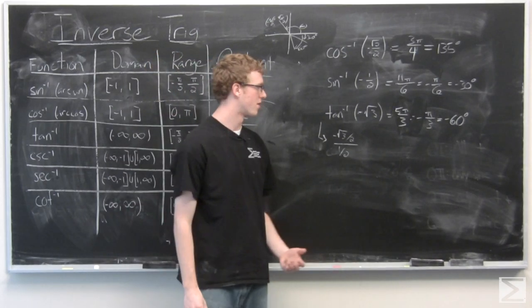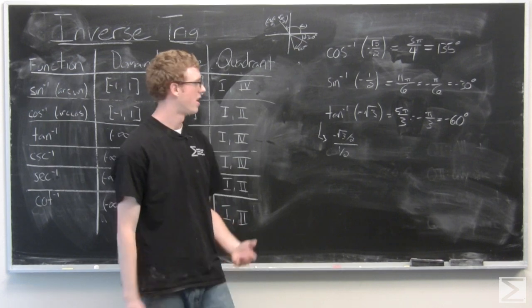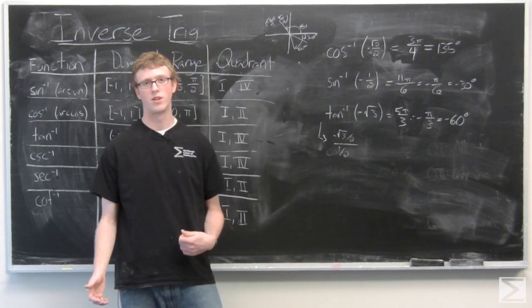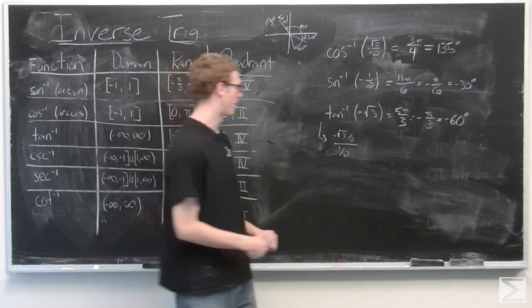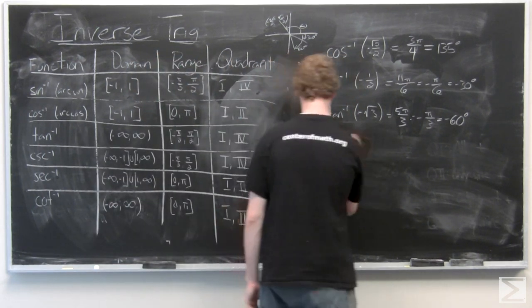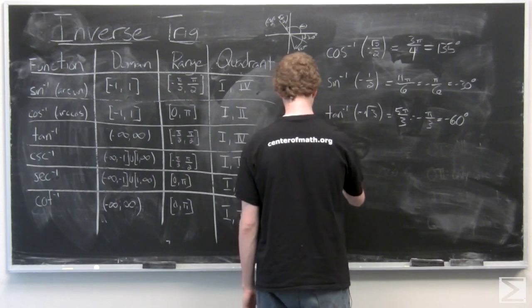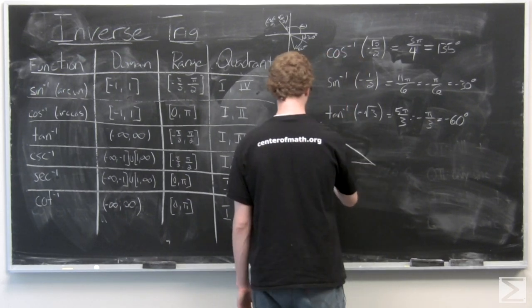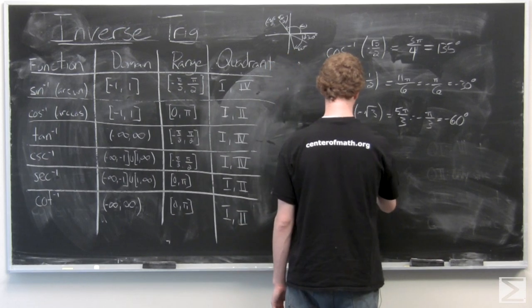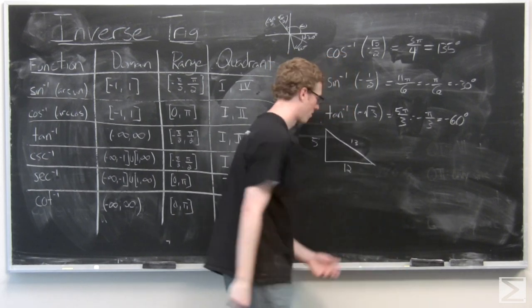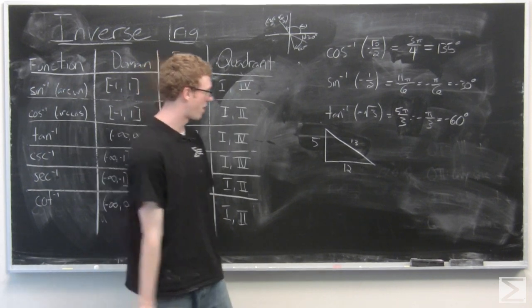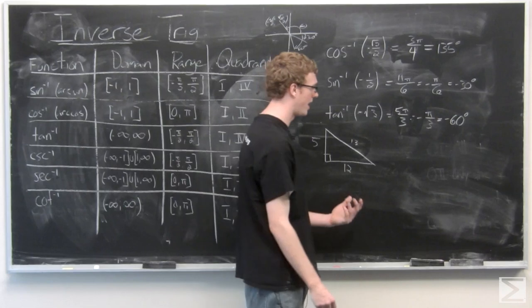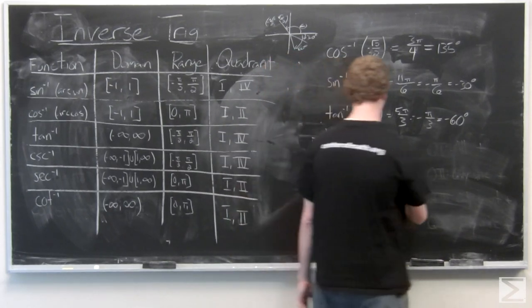So now we're going to take a look, just a quick look at a triangle, and we're going to find the values of a trig function from using inverse trig. So we have a 5, 12, 13 right triangle, a special right triangle,